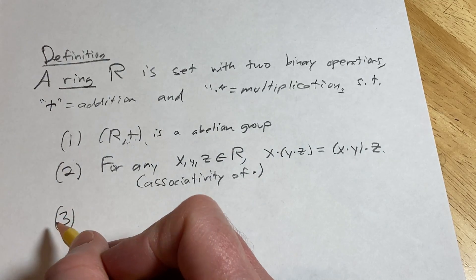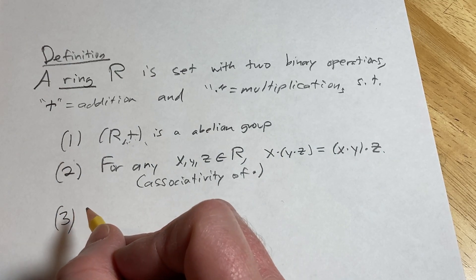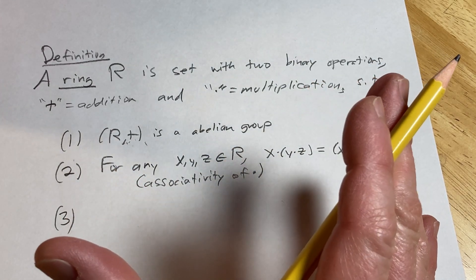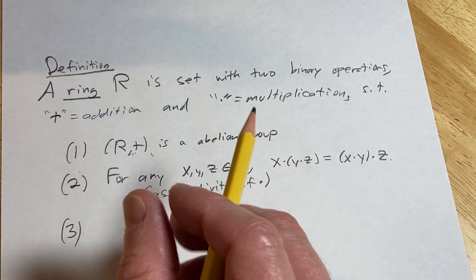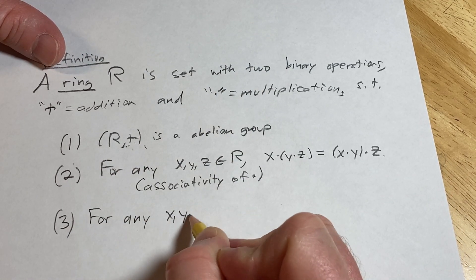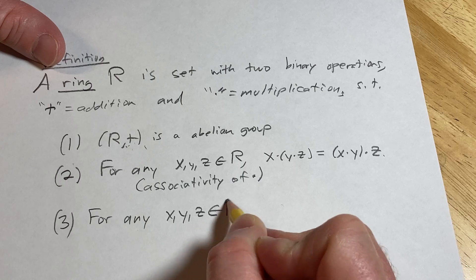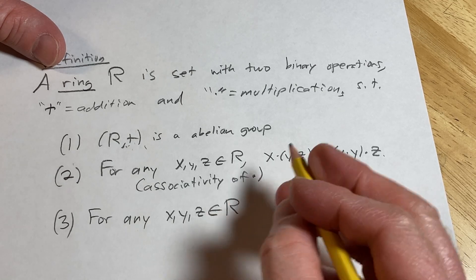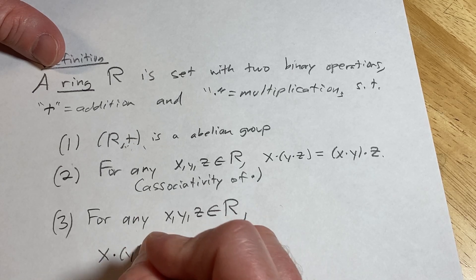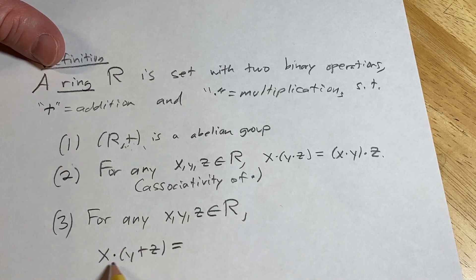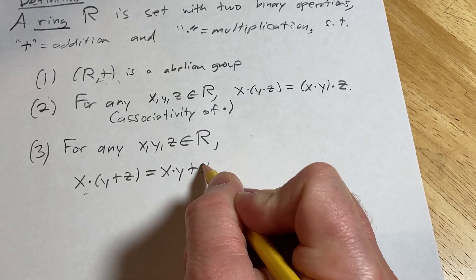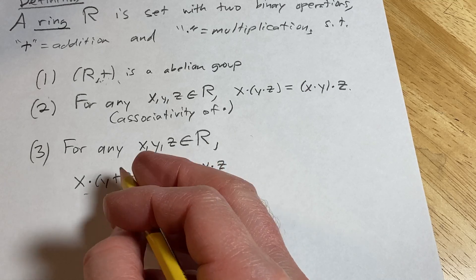And the last condition is that the distributive laws hold. These are special because these are the only things in the definition that connect the two binary operations. So for any X, Y, Z in R, we have X times (Y plus Z), and then this just distributes like you expect it would. It would be X times Y plus X times Z, just like you would expect.